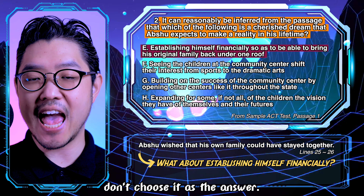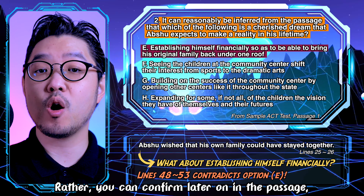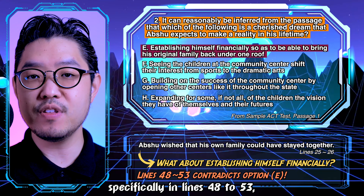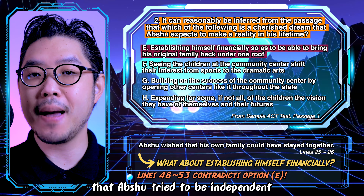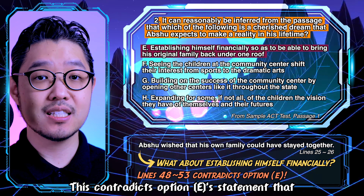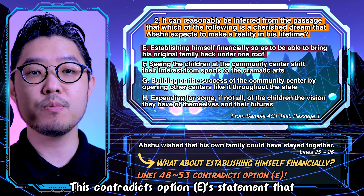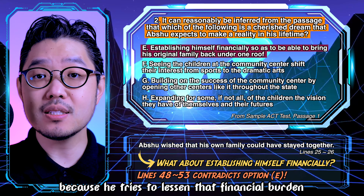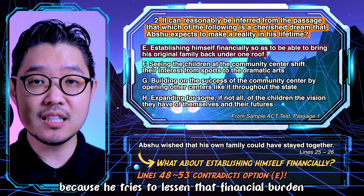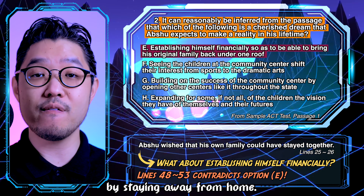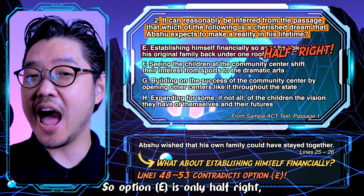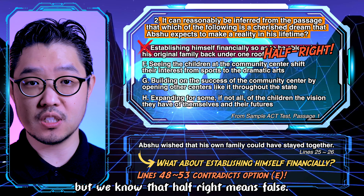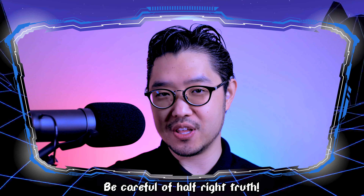Unless you confirm from the passage that Apshu indeed wanted to establish himself financially, don't choose it as the answer. Rather, you can confirm later on in the passage, specifically in lines 48 to 53, that Apshu tried to be independent and did not want to go back home. This contradicts option E's statement that Apshu wanted to bring the family under one roof, because he tried to lessen the financial burden by staying away from home. So option E is only half-right, and we know that half-right means wrong. Be careful of half-right truth.